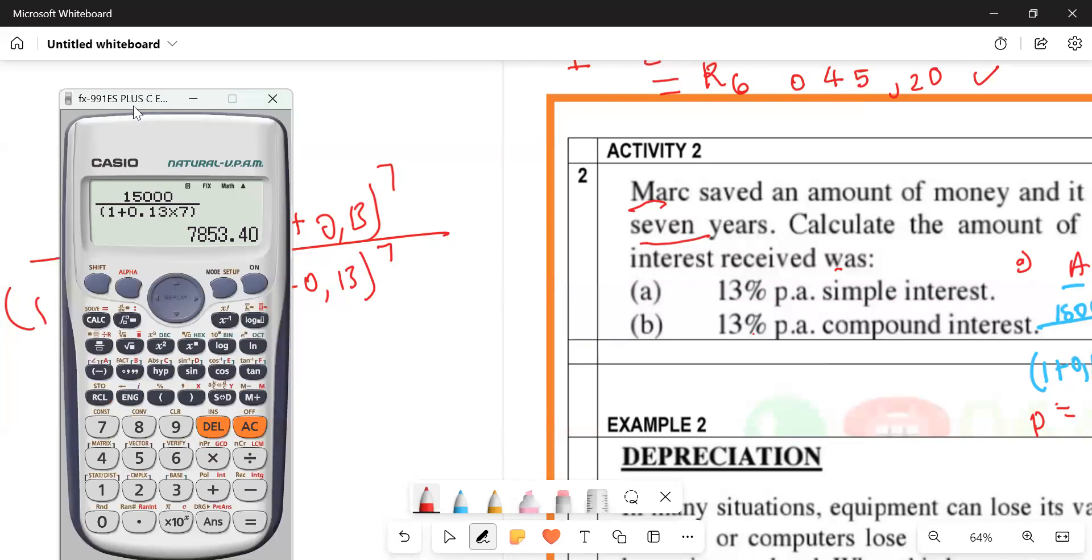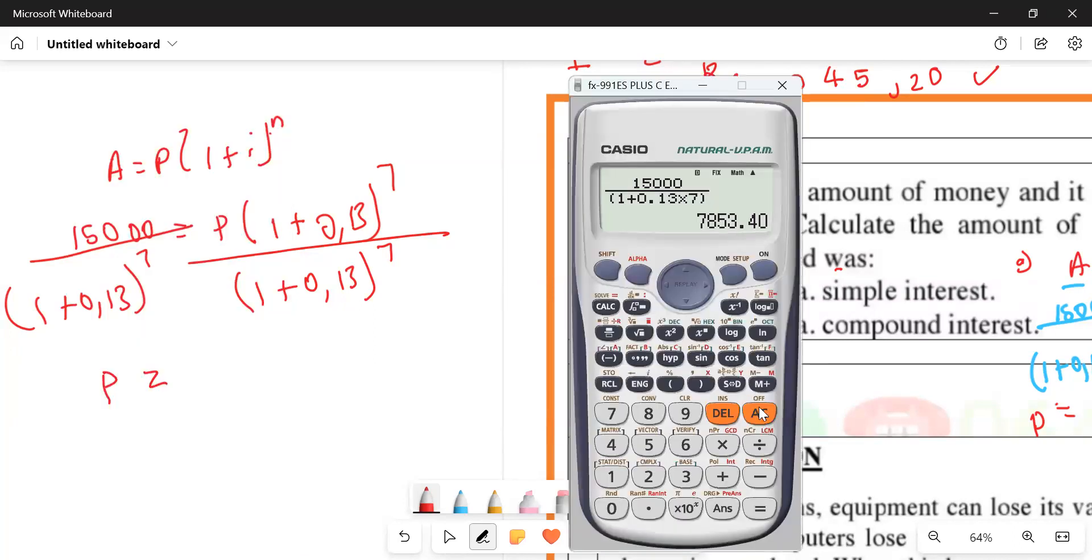How do you type it in your calculator? Fraction: 15,000 all over one plus 0.13 close bracket to the power of seven. What do you get?